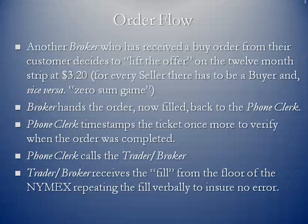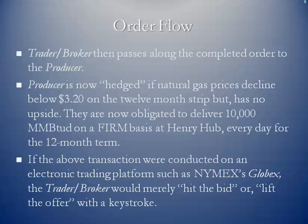The phone clerk calls back the trader or financial broker who represents the producer. The trader broker receives what we call the fill from the floor of the NYMEX — the order was filled — and they repeat the fill verbally to ensure there are no errors. The trader broker then passes along the completed order to the producer, saying the trade is done on the NYMEX. The producer is now what we call hedged if natural gas prices decline below $3.20 on the 12-month strip.